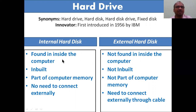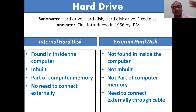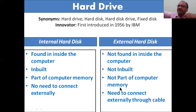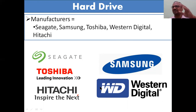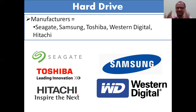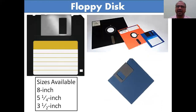Differences between internal and external hard disk: internal is found inside the computer, it is inbuilt hardware and is a part of computer memory. External is not found inside the computer, not inbuilt, not a part of computer memory - you have to connect it externally with a USB connector. Hard drive manufacturers include Seagate, Samsung, Toshiba, Western Digital, and Hitachi - these are manufacturers of all storage devices including pen drives, USB drives, CDs, and DVDs.